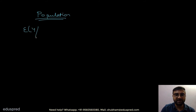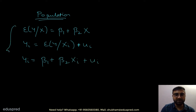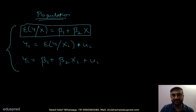The first equation is: expected value of y given x equals beta 1 plus beta 2x. The second equation is: yi equals expected value of y given xi plus ui. And the third equation is: yi equals beta 1 plus beta 2xi plus ui. These are the three equations on the population side. The first equation is the population regression line, also called the population regression function.